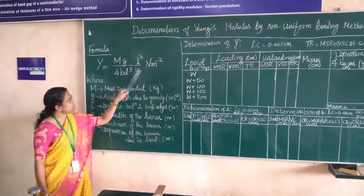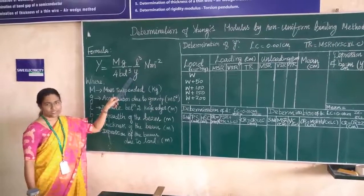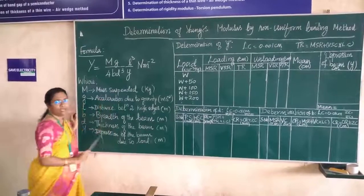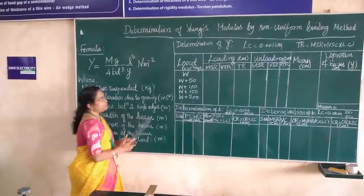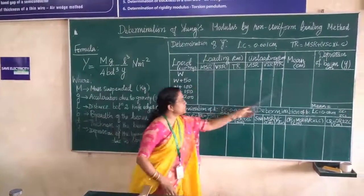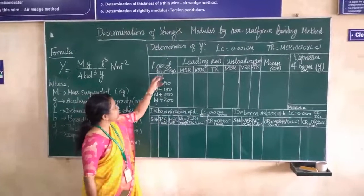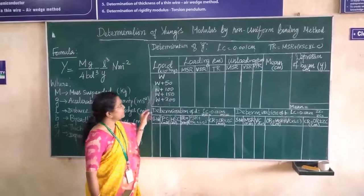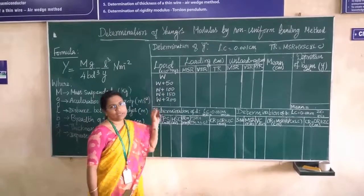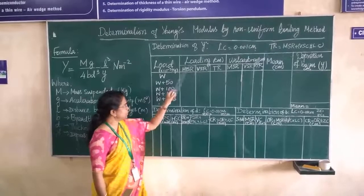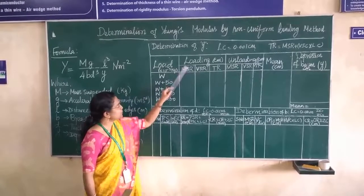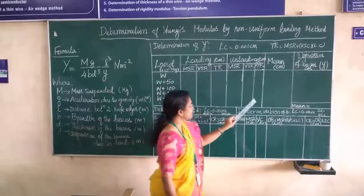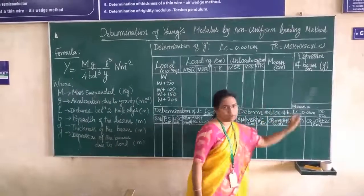We need to determine small y first. For the determination of small y, a tabular column is drawn. In this tabular column, some load is added and for that particular load, the position of the travelling microscope is noted. One part is for loading and when load is removed, the second part is for unloading. We will do the calculation later.